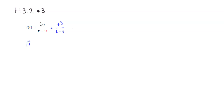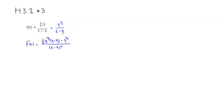So we have f prime of t. I'm going to take care of the denominator first. The denominator is t minus 9, so we're going to square that. Then take the derivative of the top, which is going to be 1/3 in front, and then subtract 1 from 1/3, so it's going to be negative 2/3. Times the bottom, which is the quantity t minus 9. Minus t to the 1/3, multiplied by the derivative of the bottom. The derivative of t is 1, derivative of negative 9 is 0, so it's simply times 1.